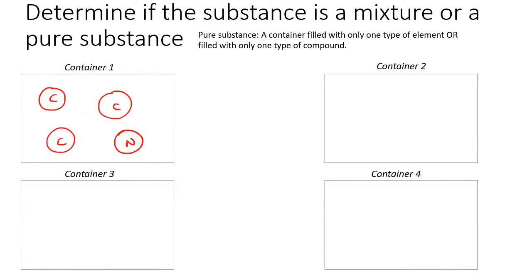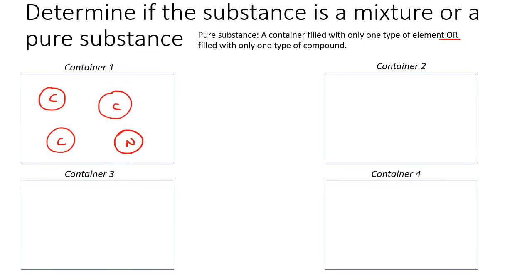Let's do a few more examples. In container number one, we have an atom of carbon, another carbon, another carbon, and then we have a nitrogen. This is definitely not only one type of element, and it's not a compound either. So this is not a pure substance — it is a mixture, because we have more than one type of element in this container.